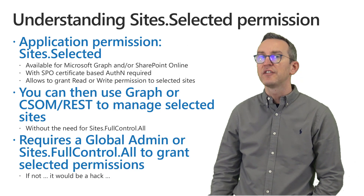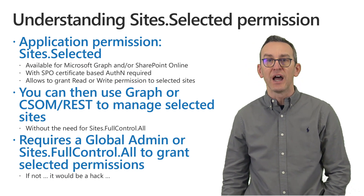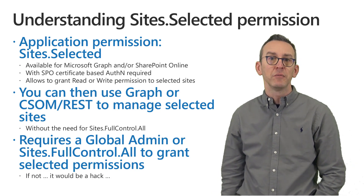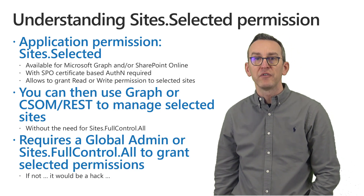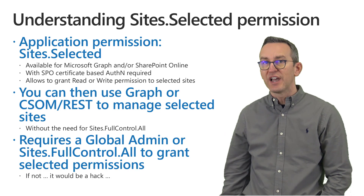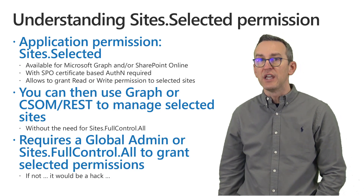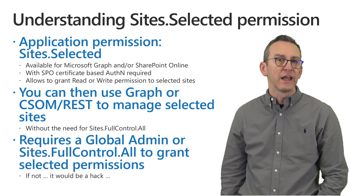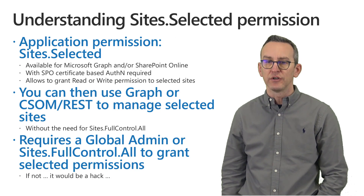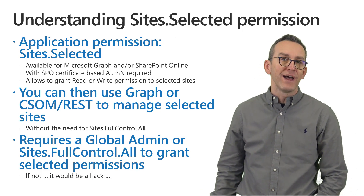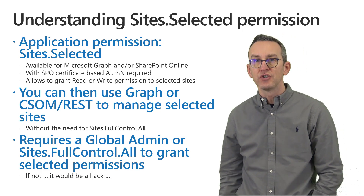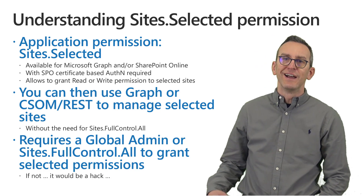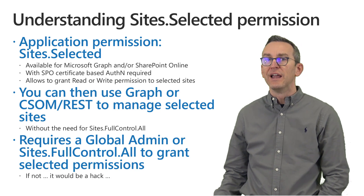This is similar to what you used to do with the Azure Access Control Service when you registered an application built with the SharePoint Add-in model, just with permissions for a specific site collection. Nowadays, with the site.selected permission, you can do the same without relying on Azure ACS, just relying on Azure Active Directory and OAuth. You no longer need to provide the site.fullcontrol.all permission to your Azure AD registered applications in order to have access to a specific site collection with elevated privileges.